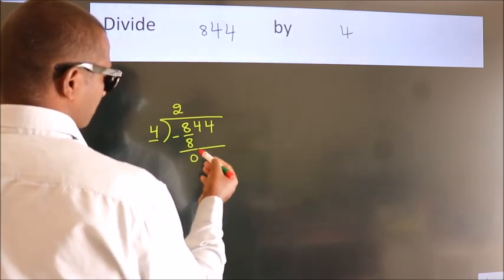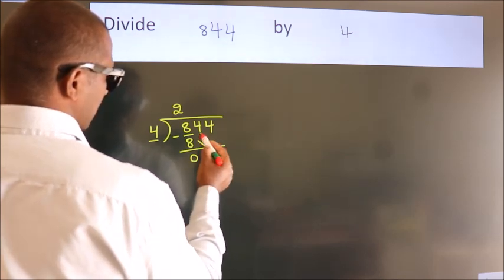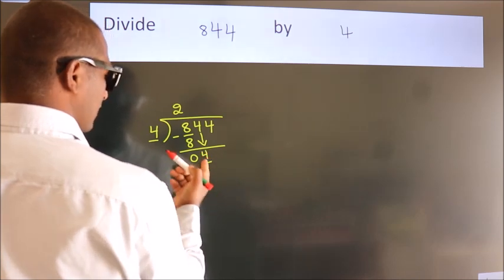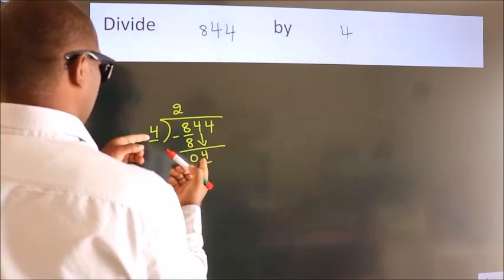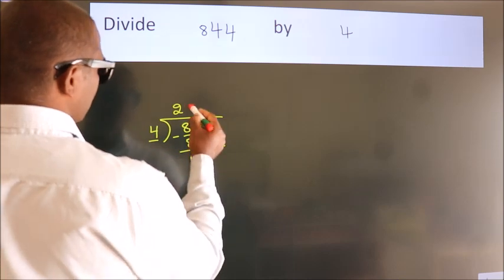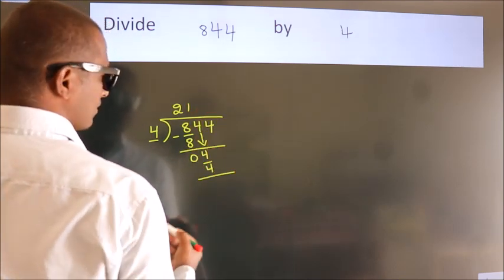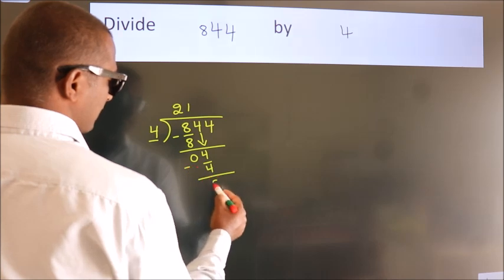After this, bring down the beside number. So 4 down. So 4. When do we get 4? In 4 table. 4 1s, 4. Now we subtract. We get 0.